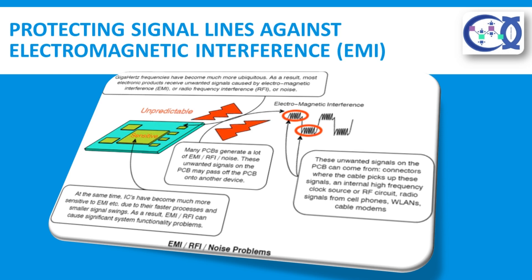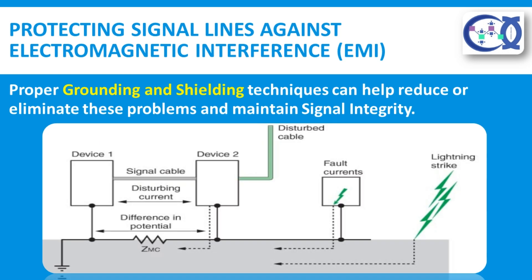In today's dynamic industrial environments, electronic devices, signal and power wiring, and other electrical or process equipment often interact to create noise or electromagnetic interference (EMI) problems, which can degrade critical measurement and control signals. Proper grounding and shielding techniques can help reduce or eliminate these problems and maintain signal integrity.